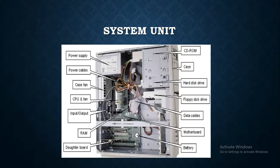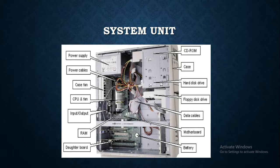This is a simple system unit where you can see the power supply, data cables, power supply cables, and a fan. When a system heats up, the case fan is used to cool it down. There is a motherboard on which the CPU is embedded, and the CPU works from the memory — it takes instructions and then executes them. You can also see the hard disk drives to store data and a battery.